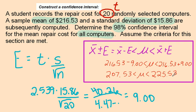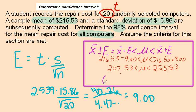I could also write that in interval notation and say the lower bound 207.53 to upper bound 225.53. We don't know about the mean, but we can say with 98% confidence in the population, the mean repair cost is between $207.53 to $225.53.